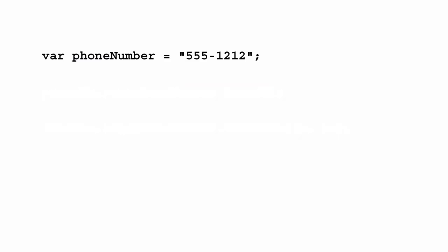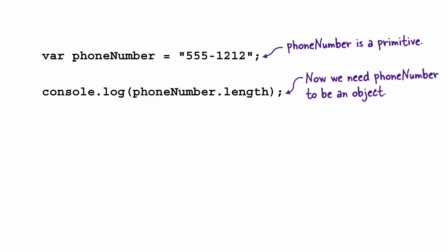So how does this work if phoneNumber is not an object? What happens is that as soon as you try to access a property or method of the primitive string phoneNumber, it's converted to a string object behind the scenes. So we start out with the primitive string value, then we try to access a property of the string, like length.